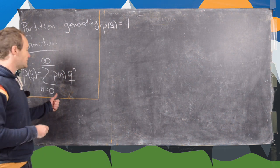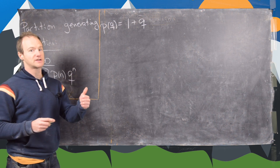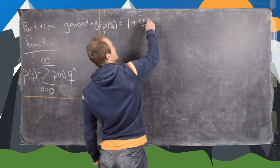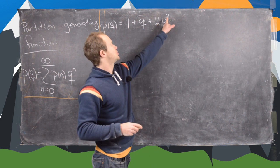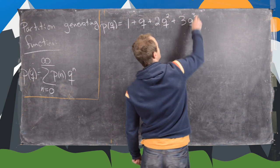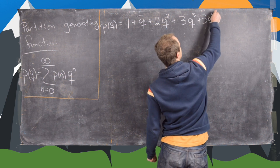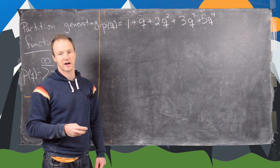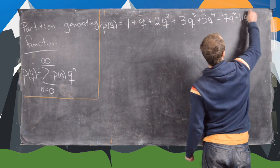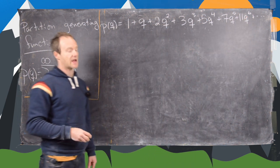Let's write out the first few terms of P(Q). We have 1·Q⁰ since p(0)=1, plus Q (one partition of 1), plus 2Q² (two partitions of 2), plus 3Q³ (three partitions of 3), plus 5Q⁴ (five partitions of 4), plus 7Q⁵ (seven partitions of 5), plus 11Q⁶ (eleven partitions of 6), and so on.